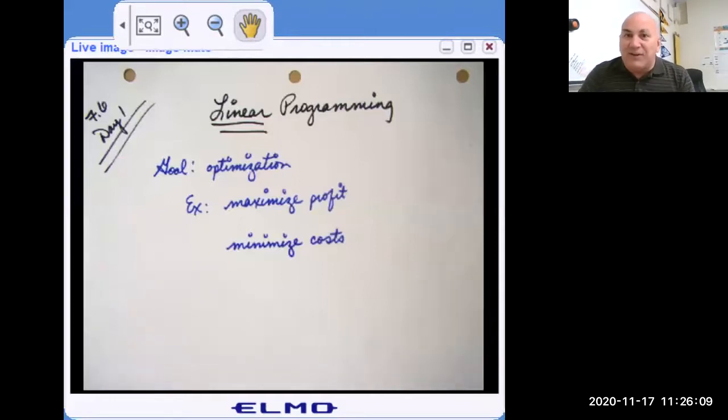The goal of linear programming is optimization. We want to maximize or minimize something. We might want to maximize profit or minimize the time it takes to perform some tasks or minimize cost. And as long as all of our equations involved are linear, which means they're all X, Y, Z, whatever to the first power, we can do this.